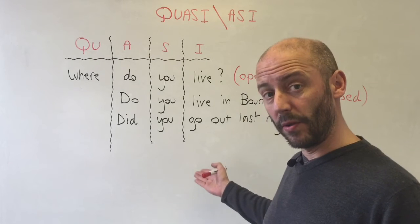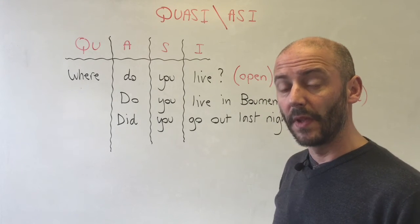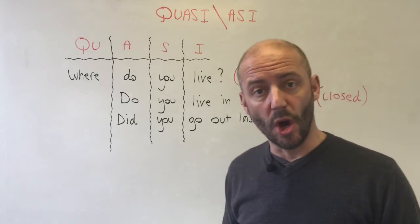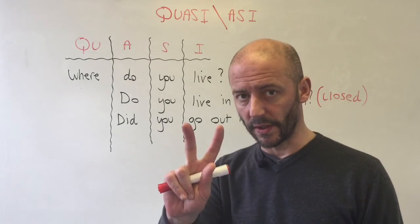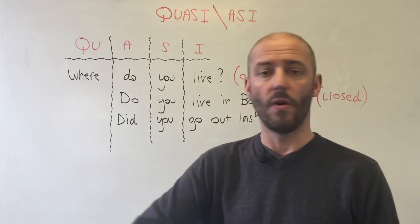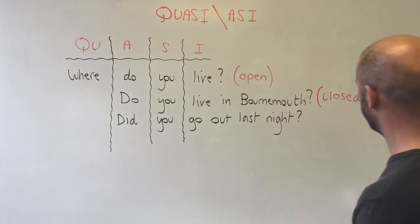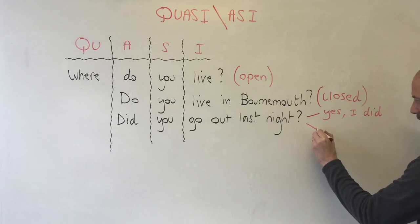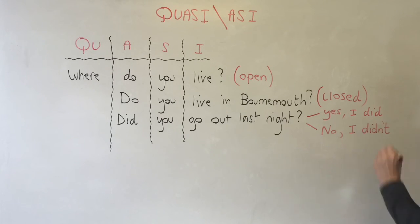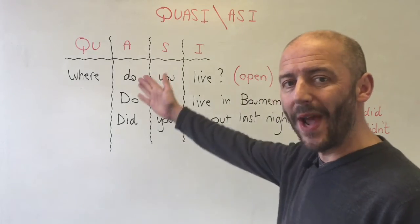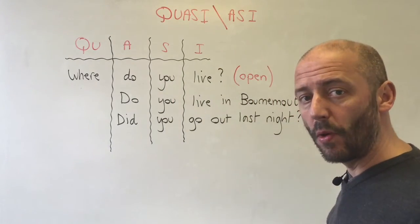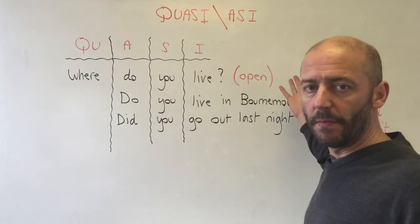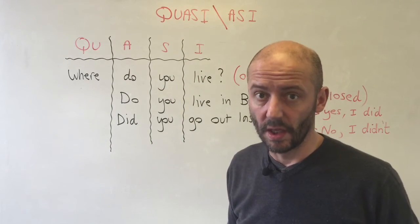Another example: did you go out last night? Yes, I did. No, I didn't. You have two choices: yes or no. So remember QUASI for open questions — where do you live? I live in Bournemouth, I live in London, I live in Spain.